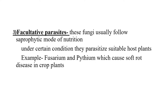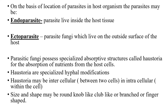The third type of parasites are fungi that usually follow saprophytic mode of nutrition but under certain conditions parasitize suitable host plants. Examples: Fusarium and Pythium, which cause soft rot disease in crop plants. On the basis of location in the host, parasites may be endoparasites, which live inside the host tissue, or ectoparasites, which live on the outer surface of the host tissue. Parasitic fungi possess specialized absorptive structures called haustoria for absorption of nutrients from host cells. Haustoria are specialized hyphal modifications and may be intercellular or intracellular. Their size and shape may be round, knob-like, club-like, branched, or finger-shaped.